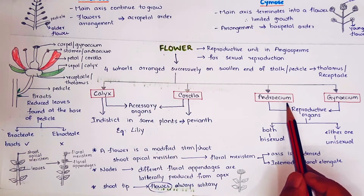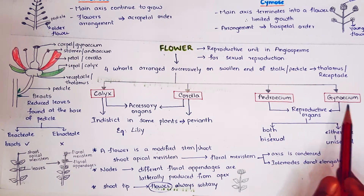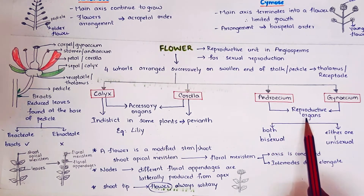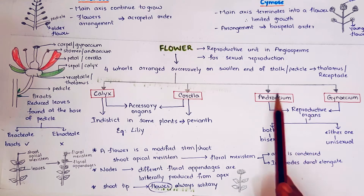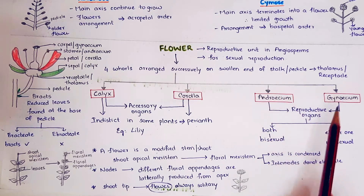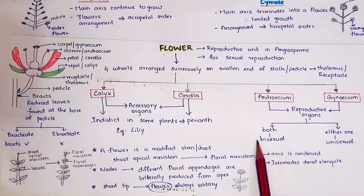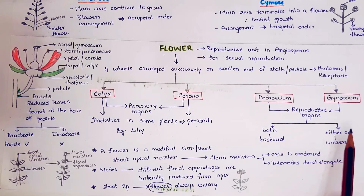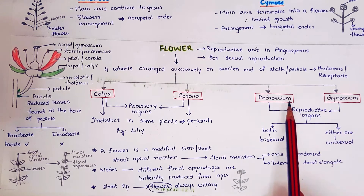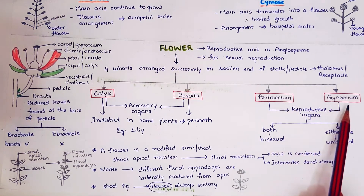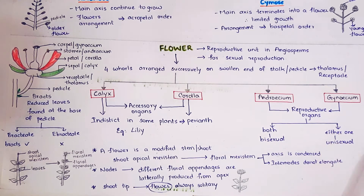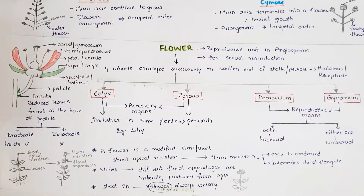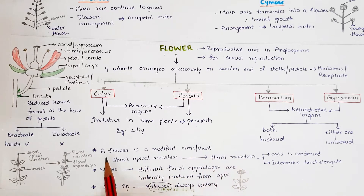Androecium and gynoecium are the reproductive organs of the flower. If a flower has both androecium and gynoecium, it is considered a bisexual flower. If the flower has either one — that is, either androecium or gynoecium — it is considered a unisexual flower.